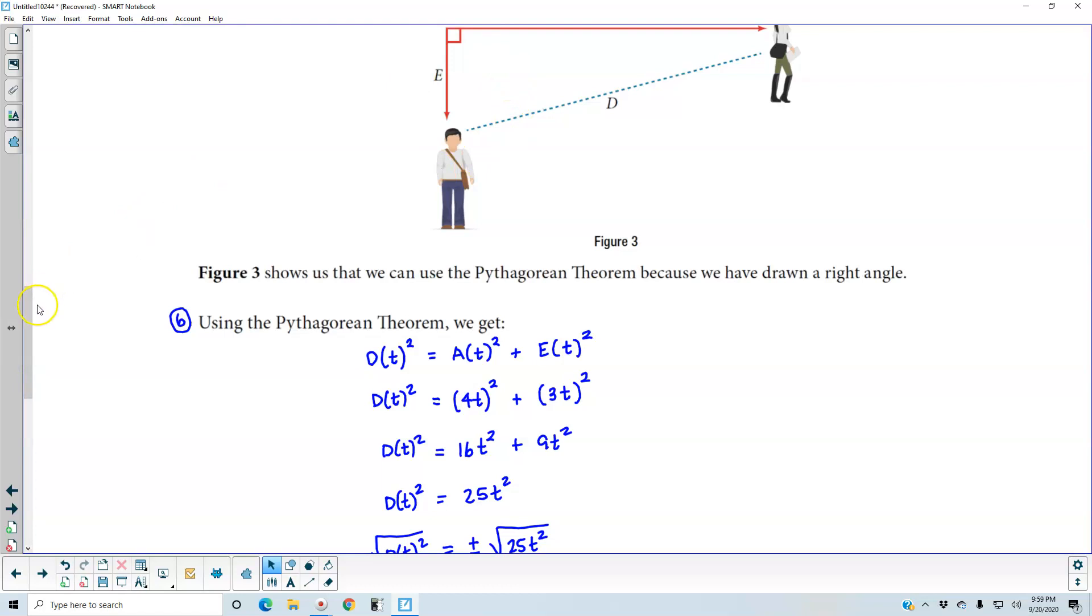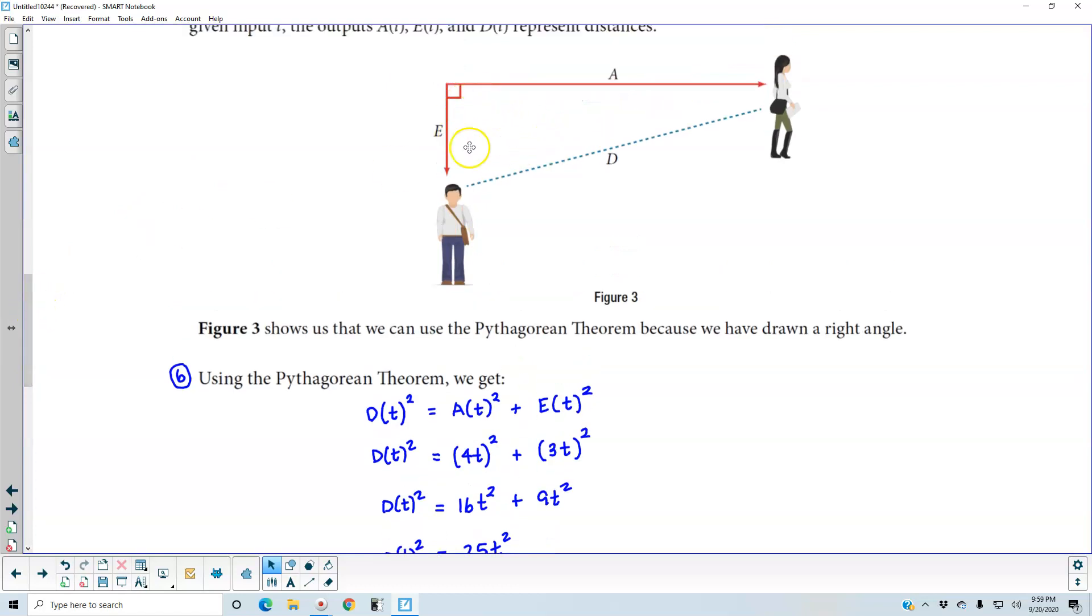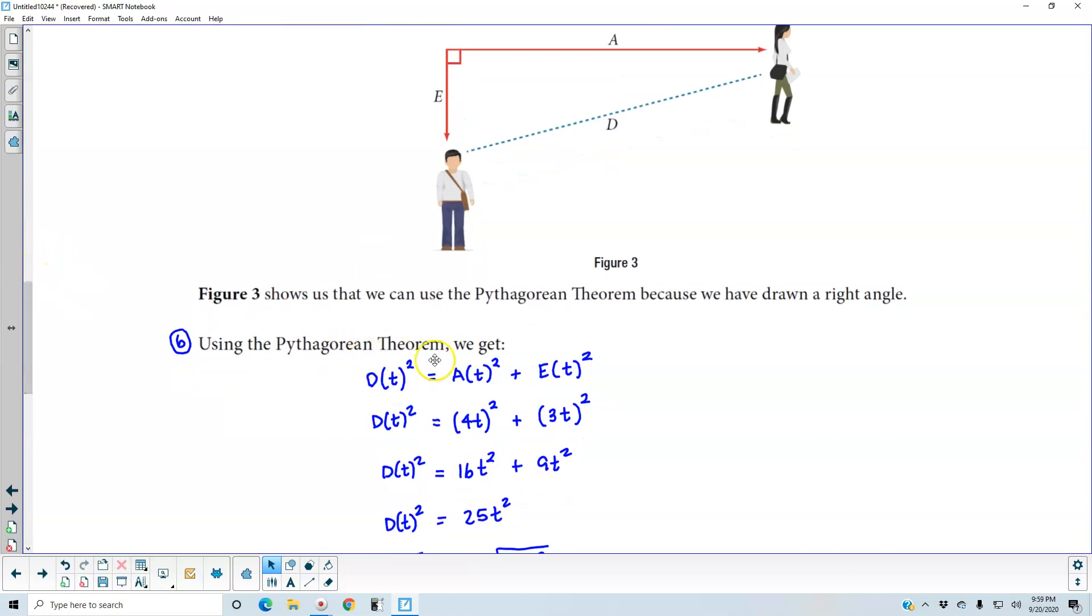So what this does is, this should give you an idea of what this looks like. It's going to represent the Pythagorean theorem because we have drawn a right angle. So now we're going to use the Pythagorean theorem.